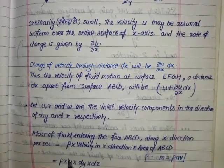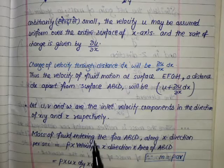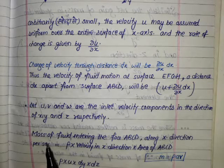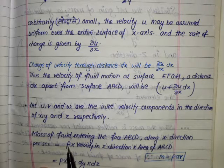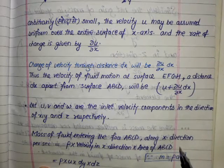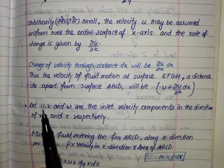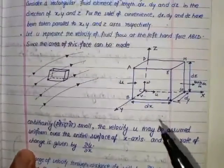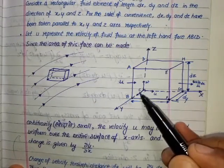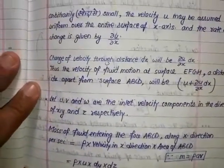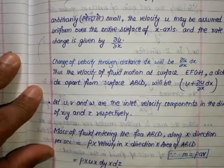Consider the velocity component u in the x direction. The mass of fluid entering face ABCD along the x direction per second is given by the mass flow rate: ρ × velocity in x direction × area of ABCD. The area of ABCD is dy·dz, so the mass entering per second is ρ·u·dy·dz.